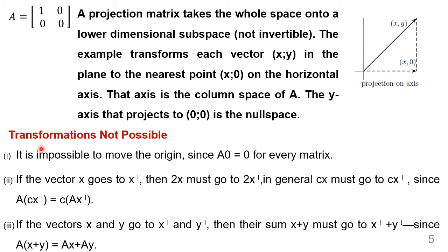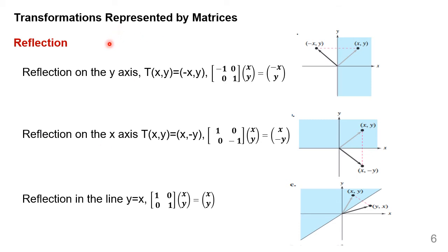Some transformations are not possible. Suppose if I want to shift the origin (0, 0), I cannot move this origin, because when I multiply with whatever matrix A, it turns out to be 0. Also, if x goes to x', then 2x must also go to 2x'. In general, tx must go to tx', as A(tx) = t(Ax). Similarly, if vectors x and y go to x' and y', then x plus y must go to x' plus y', since A(x+y) = Ax + Ay.